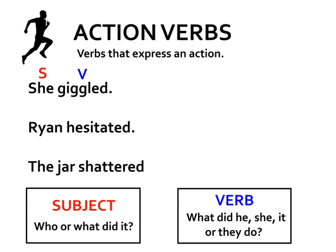'Ryan hesitated.' So who or what did it? Ryan. What did Ryan do? He hesitated. 'The jar shattered.' Let's start with our verb — what is it doing? It shattered. What shattered? The jar.